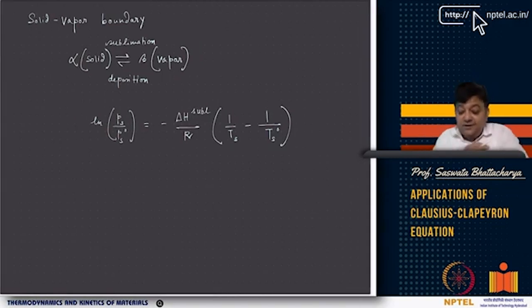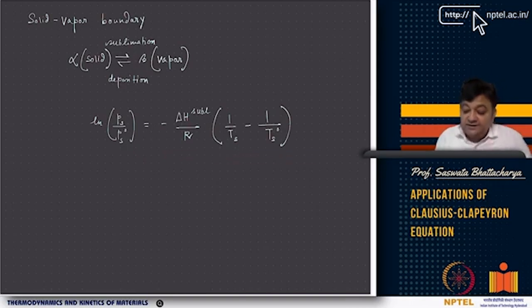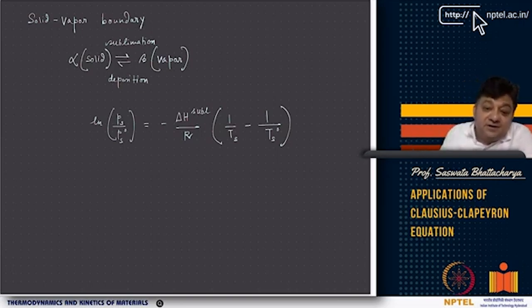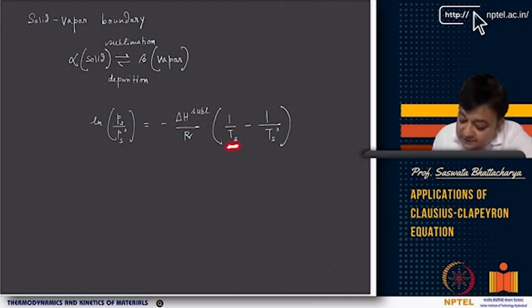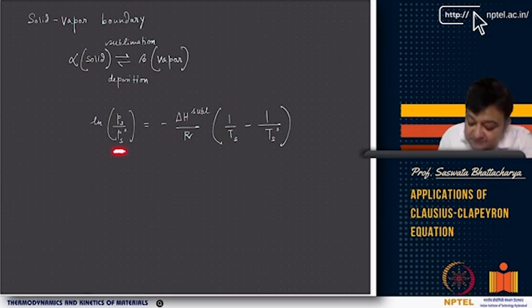For the solid-vapor boundary (sublimation or deposition), the same approach applies. The vapor phase has a much larger molar volume than the solid phase, so delta V_m ≈ V_m^vapor. Assuming ideal gas for the vapor, we get: ln(P_s / P_s0) = −(delta H_sublimation / R)(1/T_s − 1/T_s0), where T_s is the sublimation temperature of interest and T_s0 is the reference temperature.